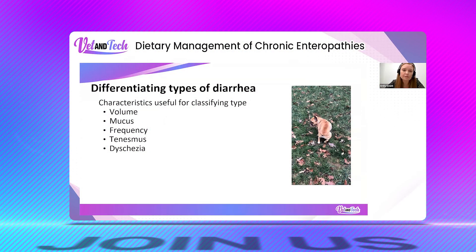When we think about differentiating the types of diarrhea, that's going to be really important to define large versus small. The classic things we think of would be volume, mucus — and not only is it present, but where is it present in the fecal ball — and then frequency, tenesmus, and dyschezia.